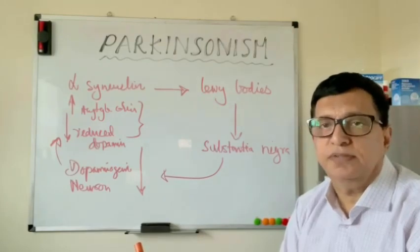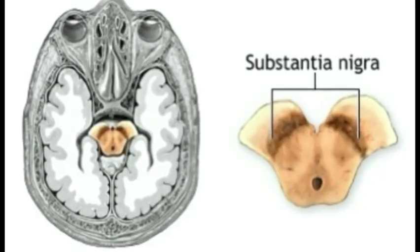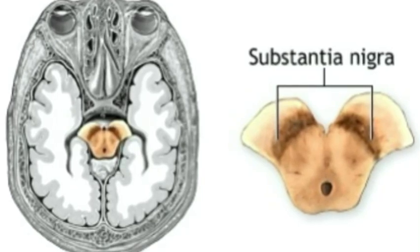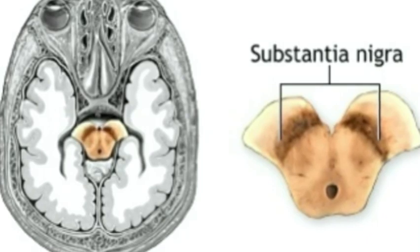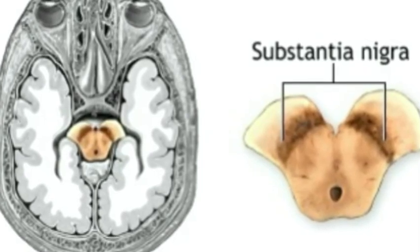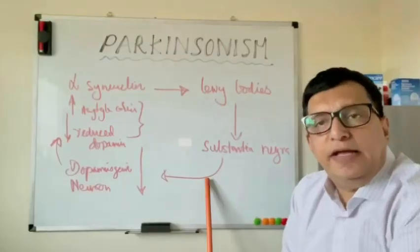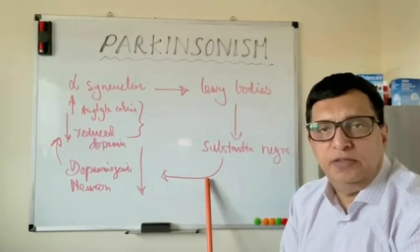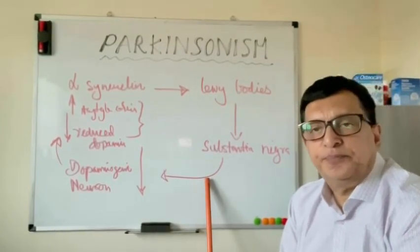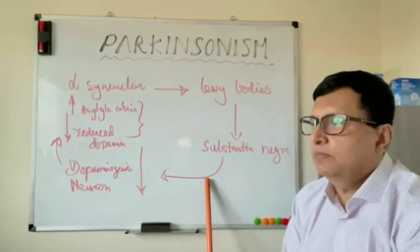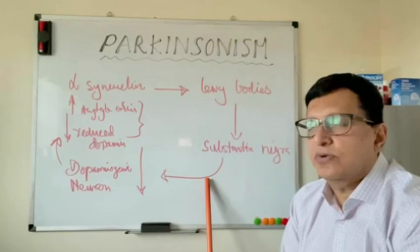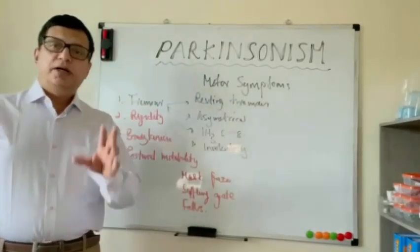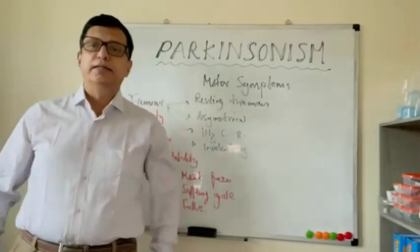You can see the dark pigmentation of the substantia nigra in the midbrain, but in Parkinsonism this pigmentation is diminished and the substantia nigra is destroyed — you can't see the clear pigmentation. As age progresses, Lewy bodies are deposited in the normal population as well, but only about 10 percent. In Parkinsonism patients, however, their substantia nigra is destroyed as a result of this Lewy body deposition. The motor symptoms of Parkinsonism mostly manifest at the mean age of around 60 years.